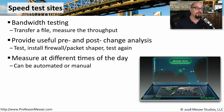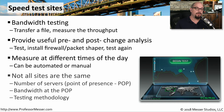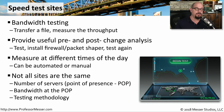You might also want to try running speed tests at different times of the day. As the amount of utilization on the network changes, you'll be able to see the impact to the overall throughput to the internet. You might want to try different speed test sites as well. Not every speed test site is built exactly the same — they might have a different number of servers, more or less bandwidth depending on what point of presence is being used, and the testing methodology may change depending on what service you're using.